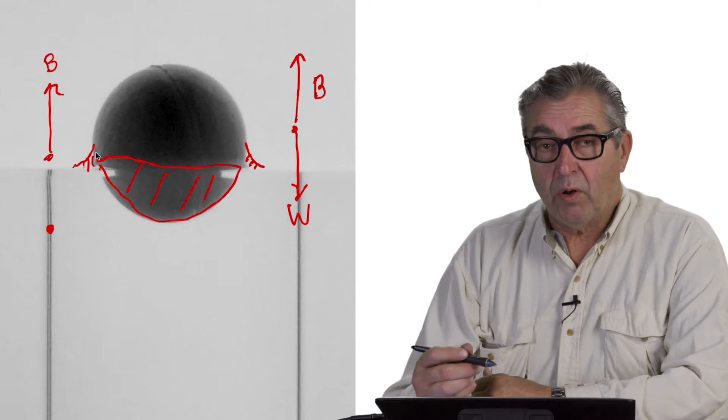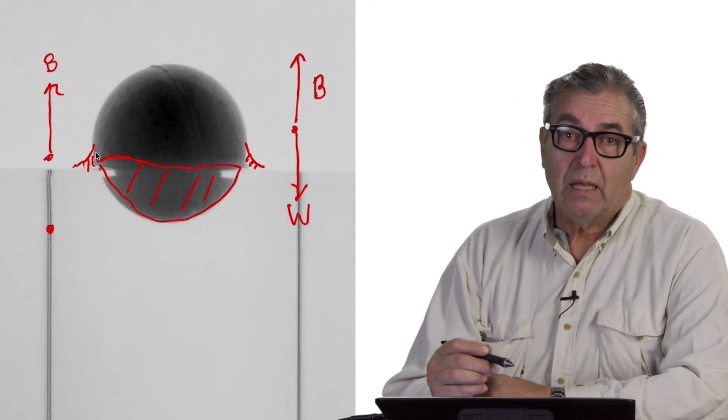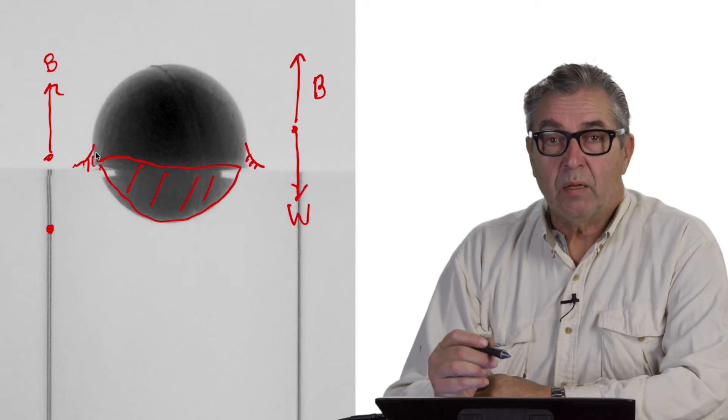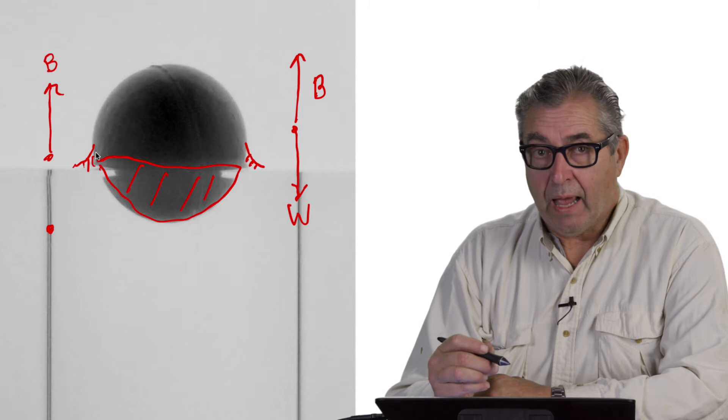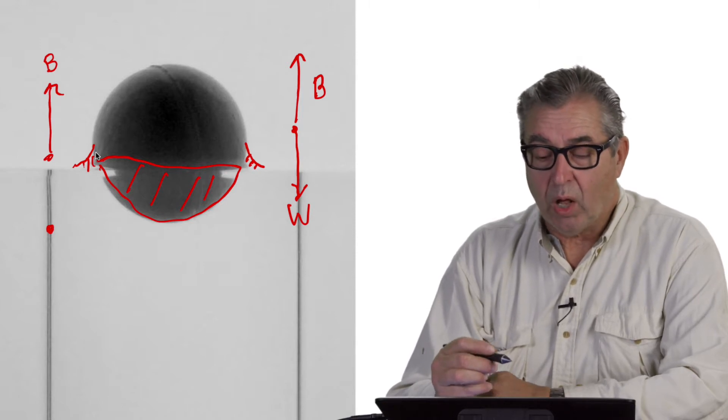From the drawing you will note that the meniscus goes up the ball, meaning that the ball is pulling up on the water and the water is pulling down on the ball.